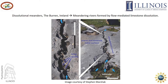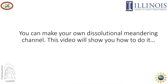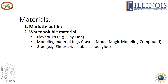Dissolutional meanders are meandering channels that form and change their shape by dissolving the bed they flow over and the walls that contain them. You can make your own dissolutional meandering channel, and this video will show you how to do it. You will need a Marriott bottle and some water-soluble material to make a slab. We will show you three different soluble materials that you can use. You can find a link below this video that will teach you how to make a Marriott bottle.